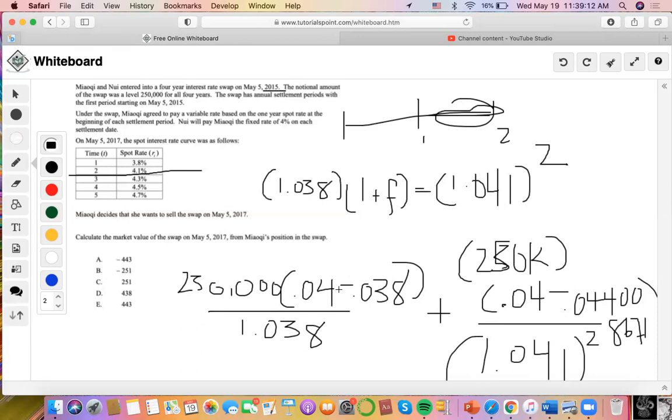So for this one, it's 1.04 minus 1.03 times $250,000. You want to divide by 1.03. That would be $2,427.19.